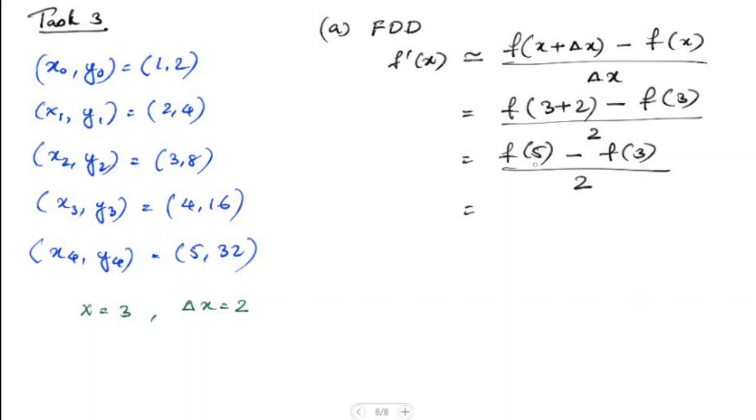Now the function when x equals 5 is here. When x equals 5, f(5) is 32.